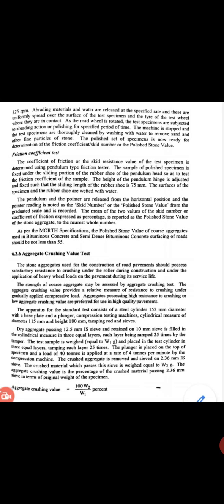The apparatus for the standard test consists of a steel cylinder of 152 mm diameter with a base plate and a plunger, a compression testing machine, and a cylindrical measure of diameter 115 mm and height 180 mm, along with a tamping rod. Dry aggregate passing the 12.5 mm sieve and retained on the 10 mm sieve is filled in the cylindrical measure in three equal layers, each layer being tamped 25 times by the tamper. The test sample is weighed as W1 and placed in the test cylinder in three equal layers, tamping each layer 25 times.